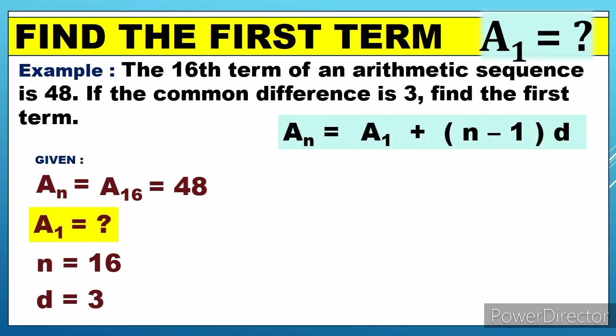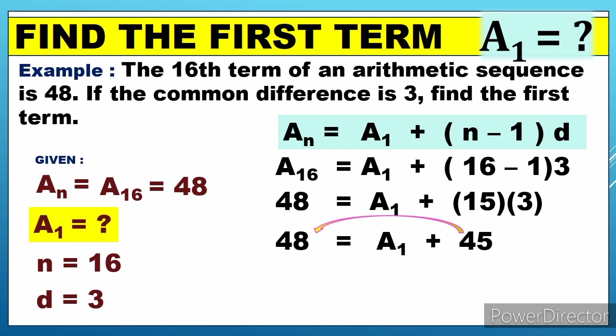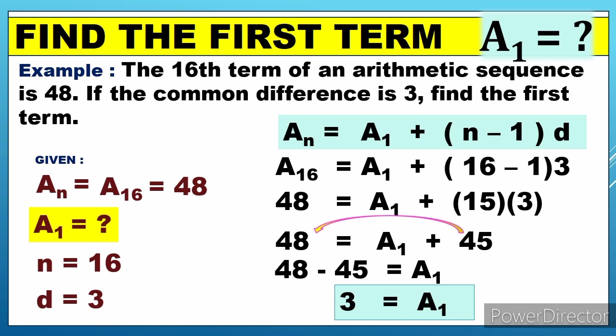We substitute the values into the formula: a sub 16 equals a sub 1 plus 16 minus 1 times 3. So 48 equals a sub 1 plus 15 times 3, which is 45. Now we solve for a sub 1 by transposing 45 to the other side — positive 45 becomes negative 45. So 48 minus 45 equals a sub 1, which gives us 3. Therefore, the first term is 3.